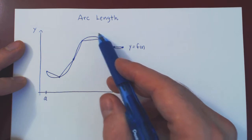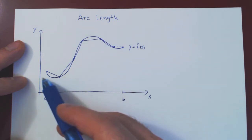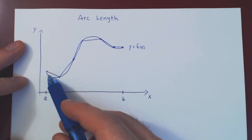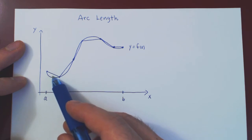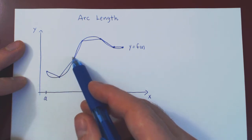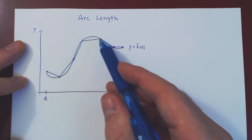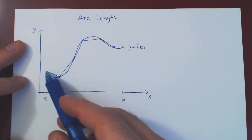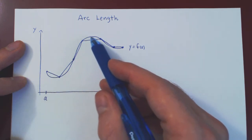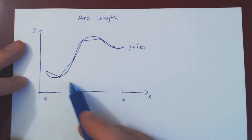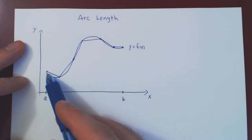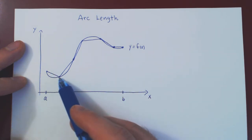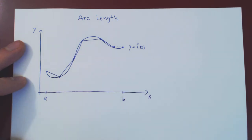You can imagine producing a similar picture with much shorter line segments — really tiny ones. Of course you'll have way more of them, but the shorter your line segments, the closer you'll be to the exact curve. And in the limit, as the length of your line segments shrinks to zero, you will achieve the exact length of the curve.